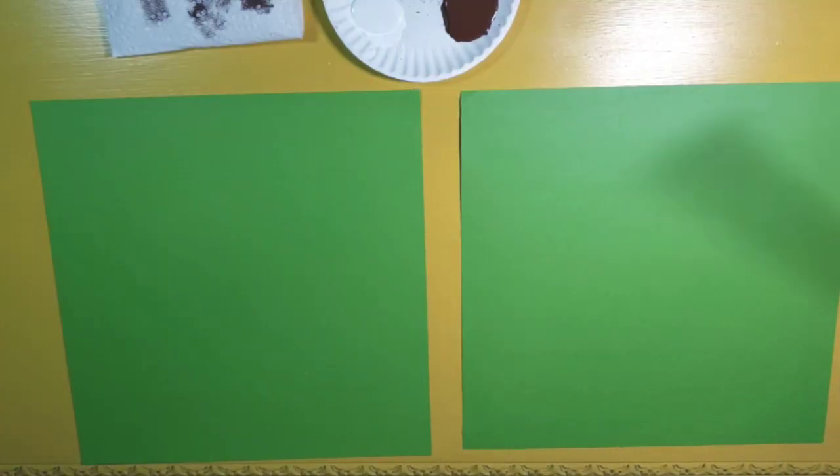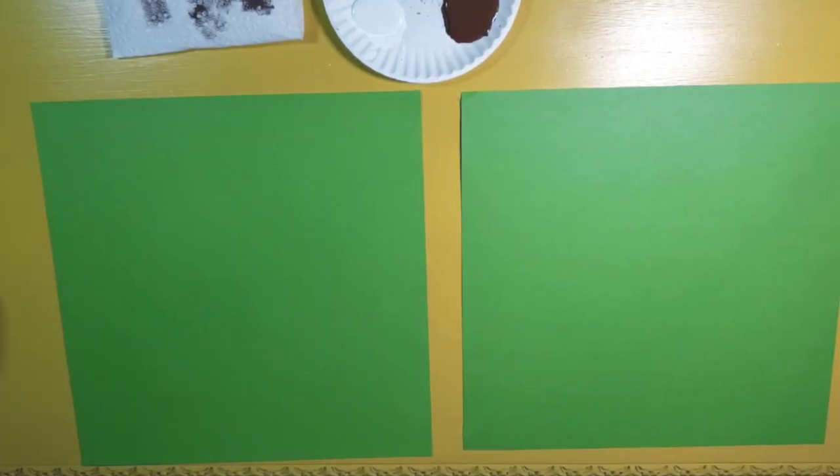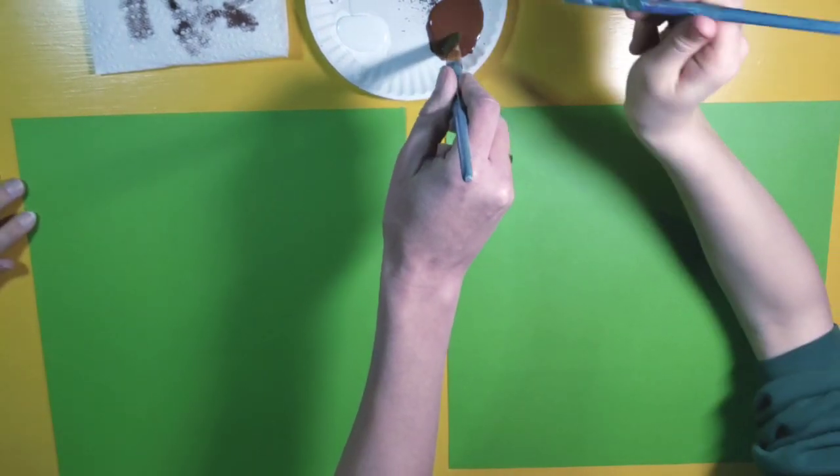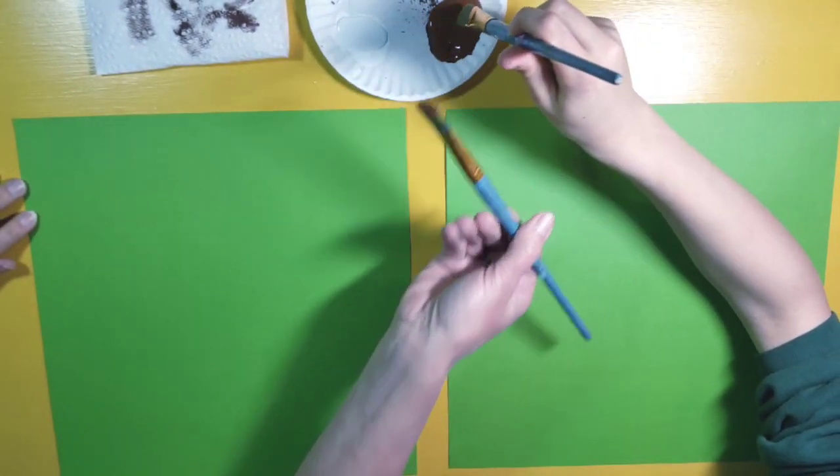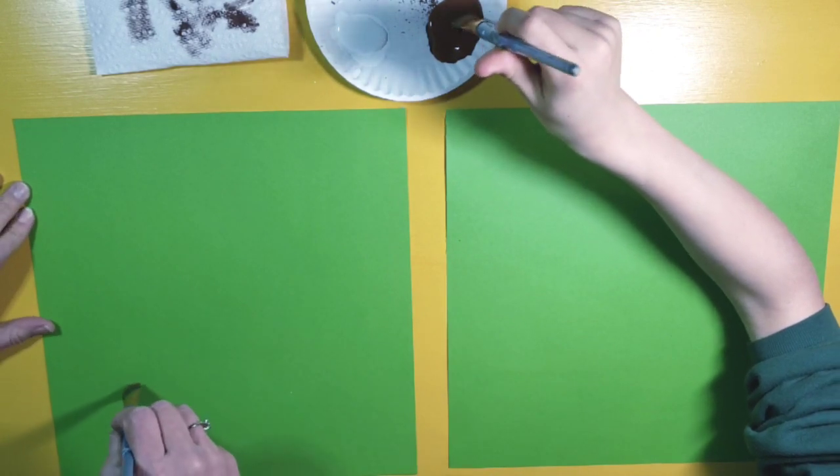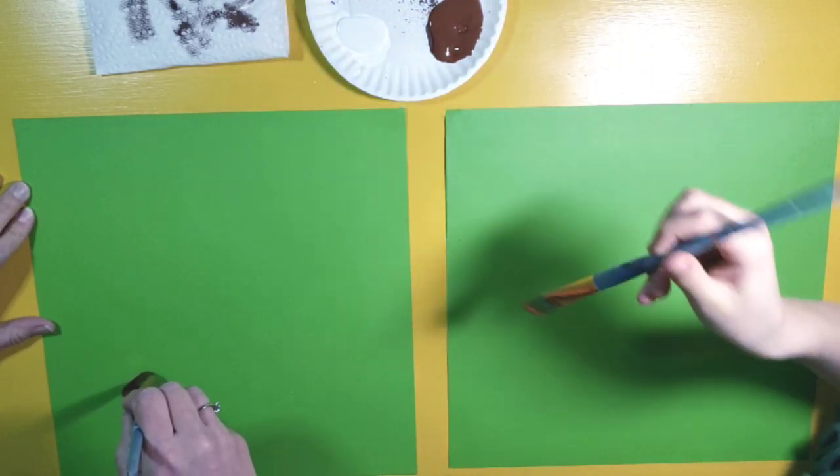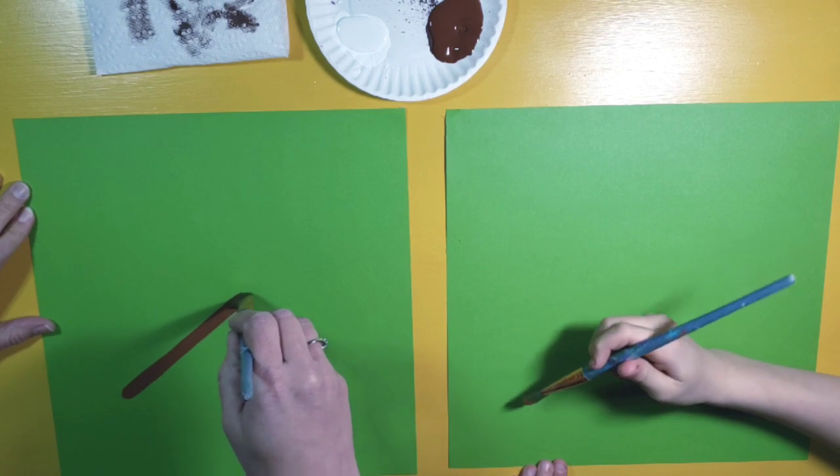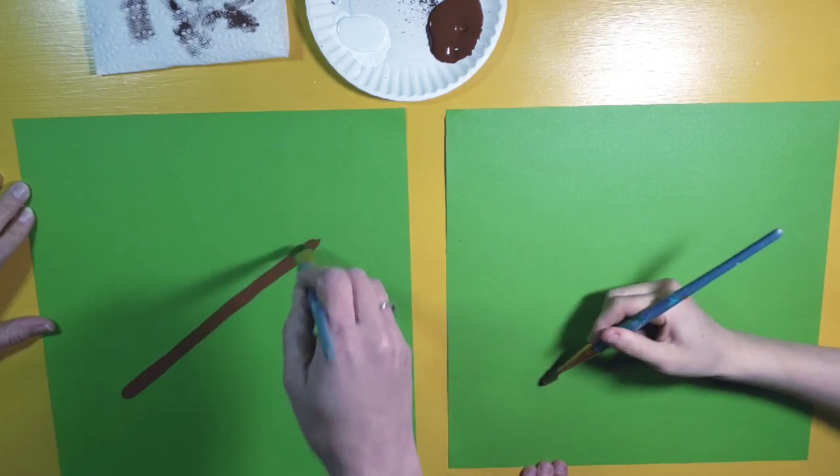So starting our football painting, we're going to dip our brush in dark brown. And I'm going to draw a line that goes diagonal across the paper, like so.